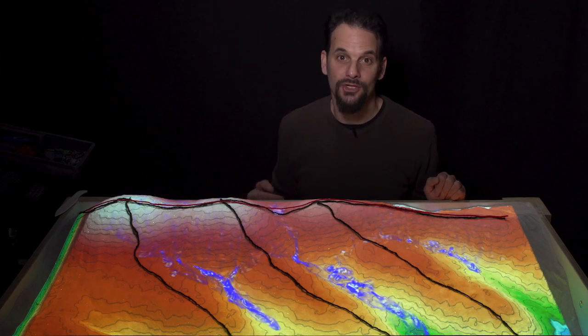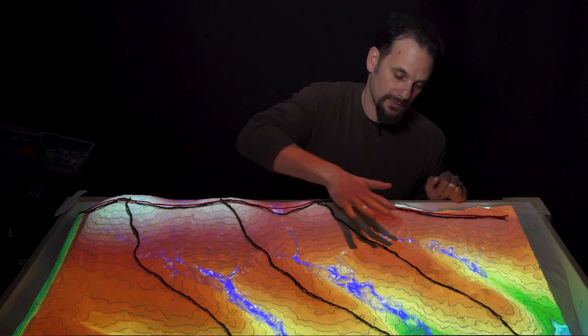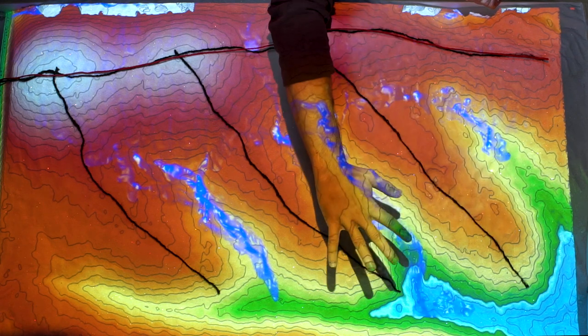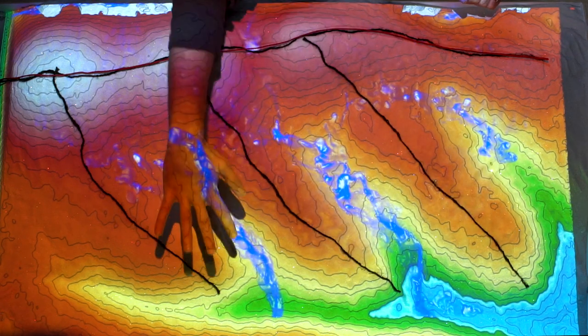Coming off the main ridge are the arms of the spine, or as Yeomans termed them, the primary ridges. Right? Here, here, and here.